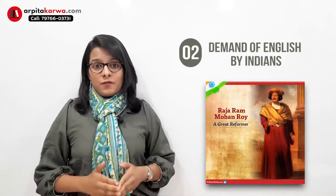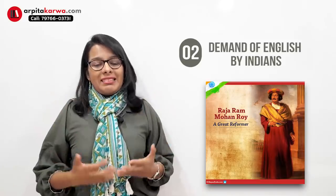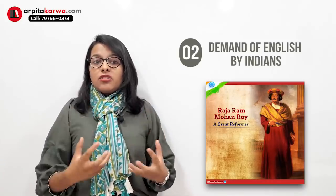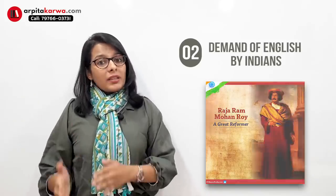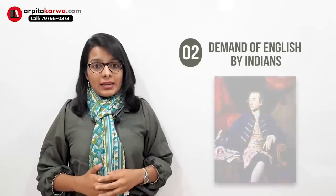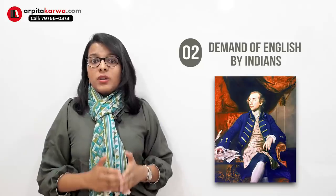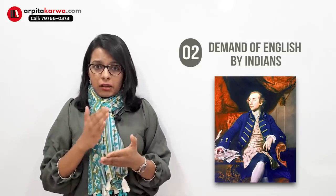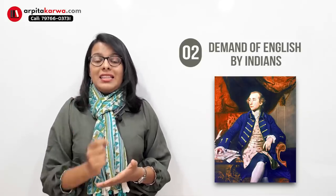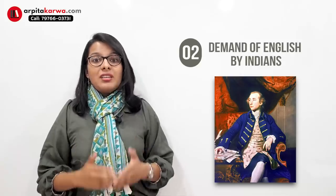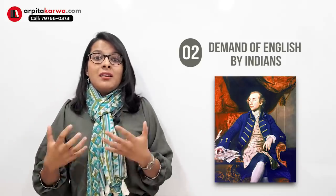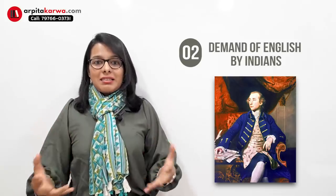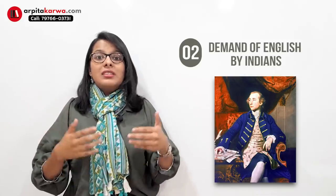Looking at the Anglicists, Raja Ram Mohan Roy — a social reformer — believed that English could take Indians to the next level, and that by introducing English, Indian minds would become more powerful. On the other hand, among the Orientalists, Warren Hastings — a British leader — was a supporter of oriental education and said that in colleges, education should be imparted in Indian classical languages like Persian and Sanskrit. So you can see how some Indians were supporting English while some Britishers were supporting Indian vernacular languages.